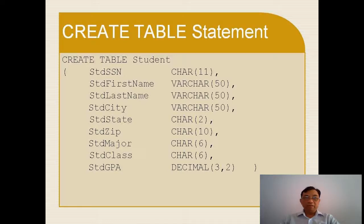And you see the data type. Data type determines the set of values — the permissible values of the field or attribute. Here you see the data type will vary based on the DBMS. You see: character means a fixed-length character string, and decimal means fixed-precision numbers.